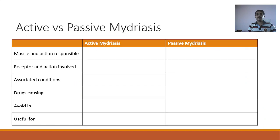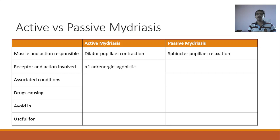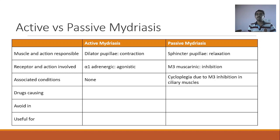Let us compare active mydriasis and passive mydriasis side by side. Active mydriasis: dilator pupillae contraction. Passive mydriasis: sphincter pupillae relaxation. Receptor and action for active mydriasis: alpha-1 receptor, agonistic. For passive mydriasis: M3 muscarinic inhibition. Associated conditions for active mydriasis: none. For passive mydriasis: always associated cycloplegia due to M3 inhibition in ciliary muscles. Drugs causing active mydriasis: phenylephrine. Drugs causing passive mydriasis: tropicamide, homatropine, cyclopentolate, and cycloplegics.